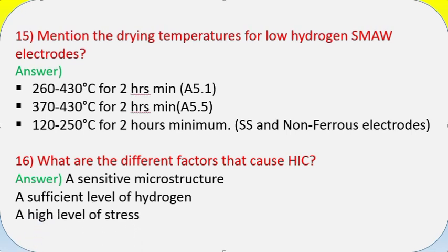Question 16: What are the different factors that cause hydrogen-induced cracking (heat)? Answer: A sensitive microstructure, a sufficient level of hydrogen, and a high level of stress.